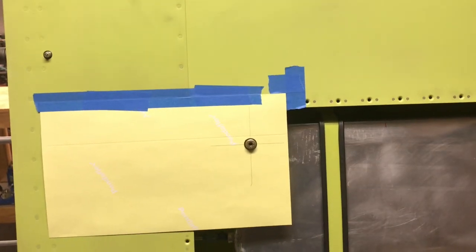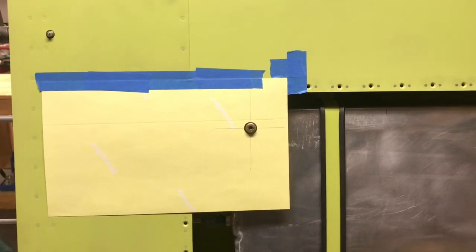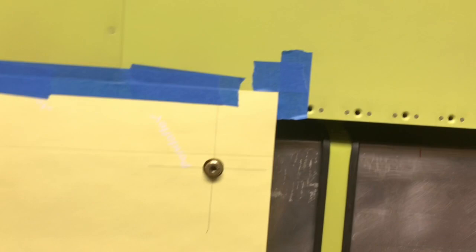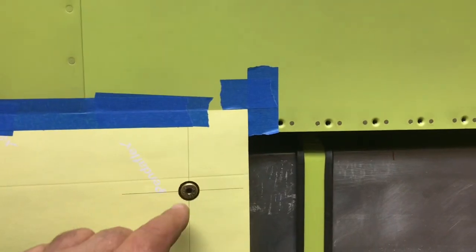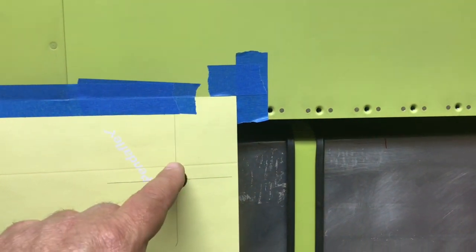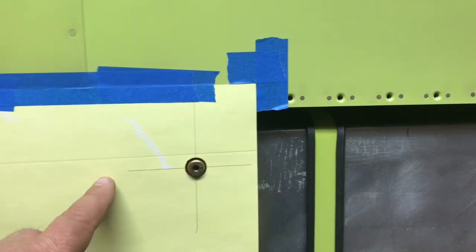So this is the method we're going to use here. I will flip this up out of the way like so, install my cover, drop it back down. And what I will do is I will actually mark these crosshairs here.